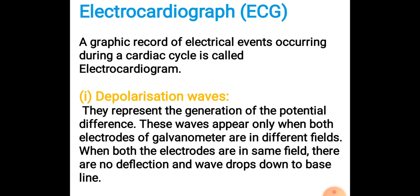Welcome to biology class. In this lecture we will discuss about electrocardiograph. Electrocardiograph is a type of machine which is used to obtain an electrocardiogram. ECG, that is electrocardiogram, is the graphical representation of the electrical activity of the heart during the cardiac cycle. If we have to study it with the help of electrical activity, we use galvanometers and electrodes connected to them.